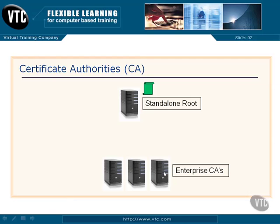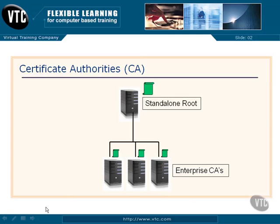Then we set up our enterprise certificate authorities. These machines are the ones that are going to generate certificates for all of our users — anybody who gets a certificate from us, it's going to come from these machines. We connect these machines over the network and install the root certificate on each of them. Any certificates that these machines hand out will also reference that root, which references VeriSign, and that's where our third-party trust comes from.